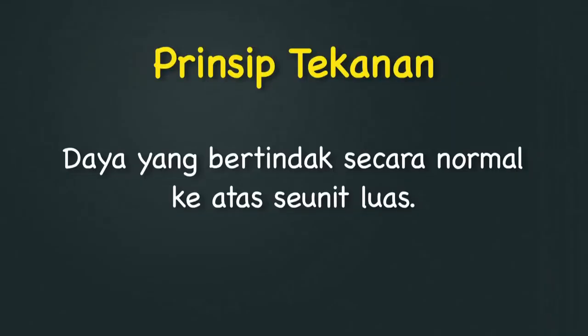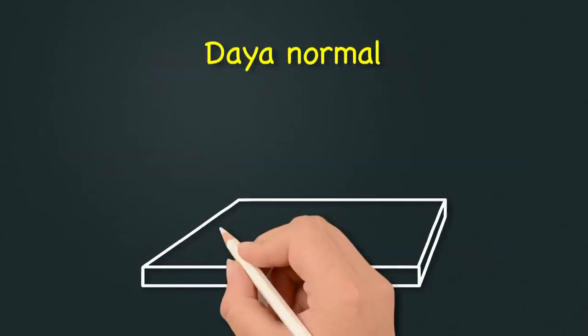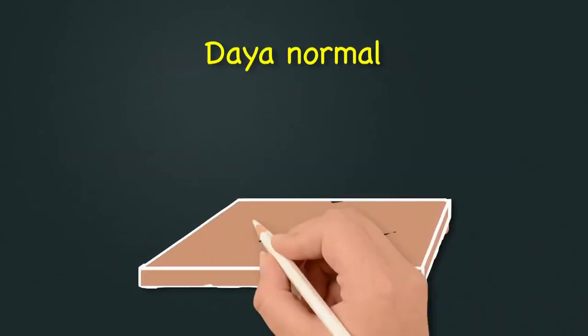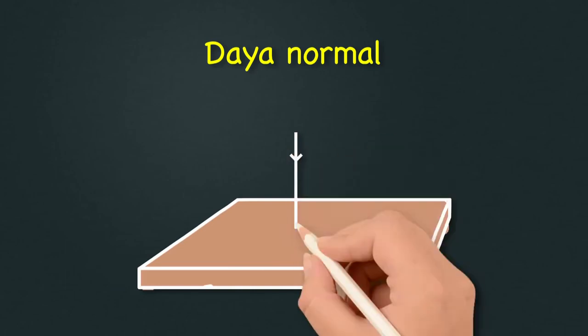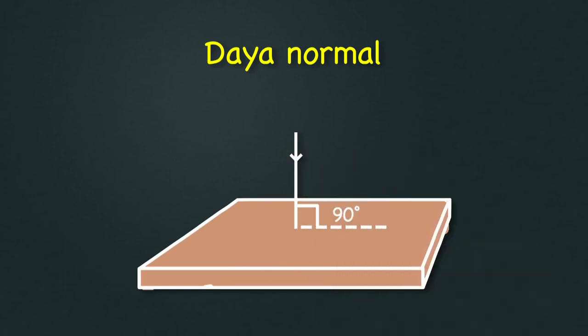Jadi apakah sebenarnya yang dimaksudkan dengan tekanan? Tekanan ialah daya yang bertindak secara normal ke atas seunit luas. Daya normal di sini bermaksud daya yang bertindak pada sudut 90 darjah ke atas seunit luas sesuatu permukaan.